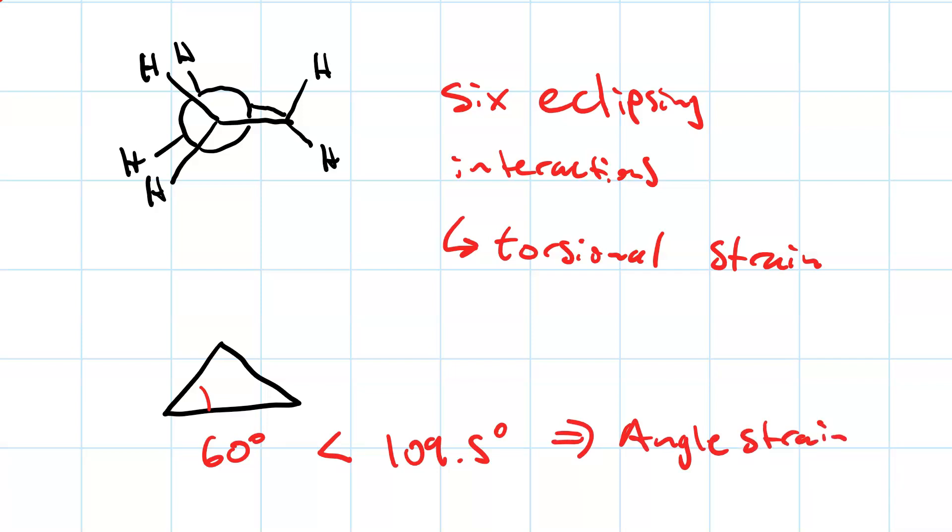When you combine the effects of torsional strain and angle strain together, it's called ring strain. Cyclopropane has maximal ring strain.